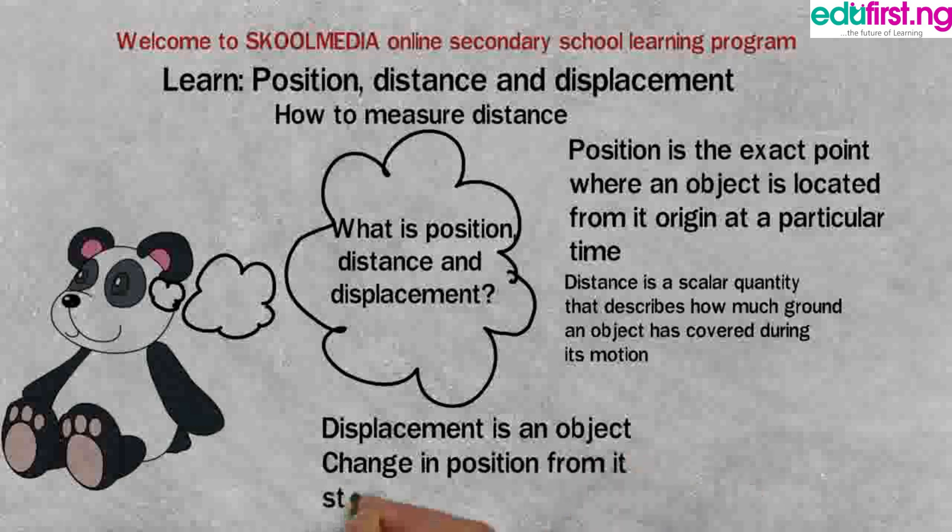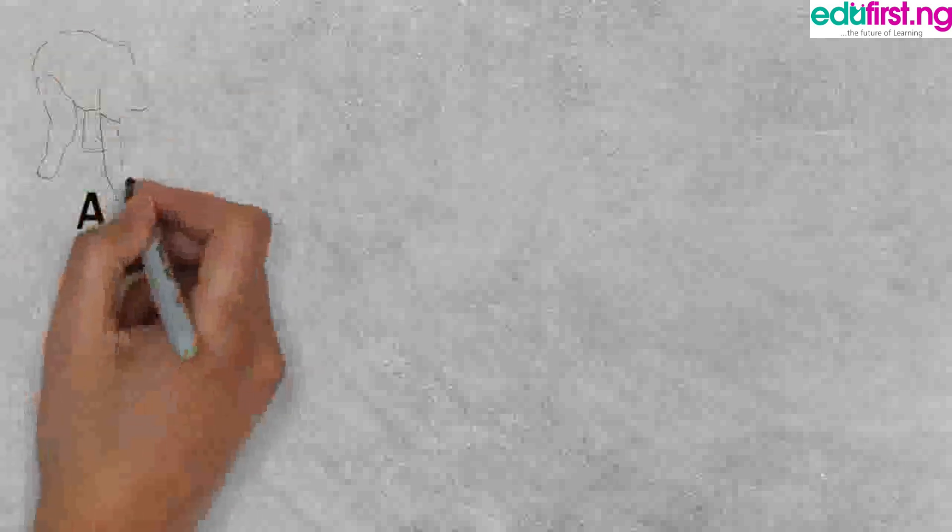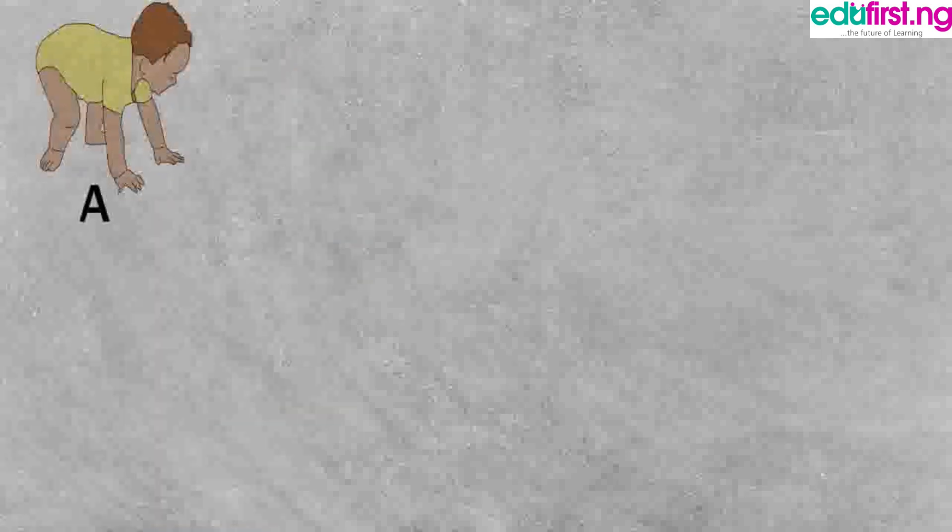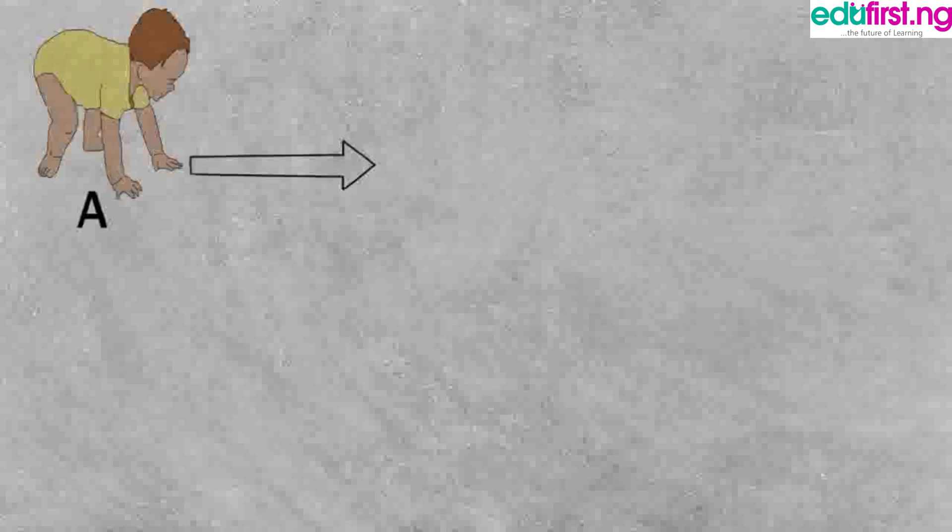Let's see some examples to understand the concept. In this example, the first point is point A which is the starting point of the baby or the point of origin. The baby then moves to a new point B.